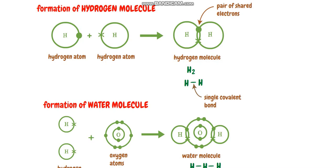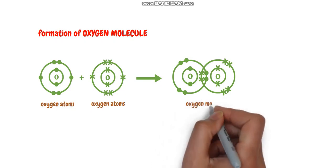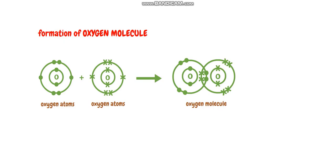These were single covalent bond examples — hydrogen and water molecule. Now let us see a double covalent bond example. The first example is the formation of an oxygen molecule. An oxygen molecule is formed by two atoms of oxygen; the electronic configuration gives six valence electrons each. These atoms share two pairs of electrons — that is four electrons — between the two oxygen atoms to form a double covalent bond.